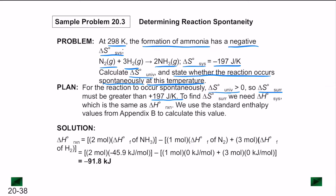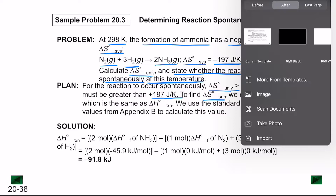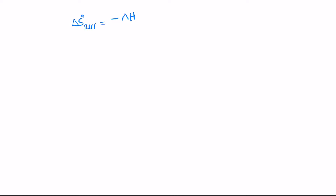To find delta S of the surroundings, we first calculate delta S of the system. Delta S of the surroundings is written as minus delta H of the system divided by T. This delta H of the system is basically going to be delta H of the reaction.